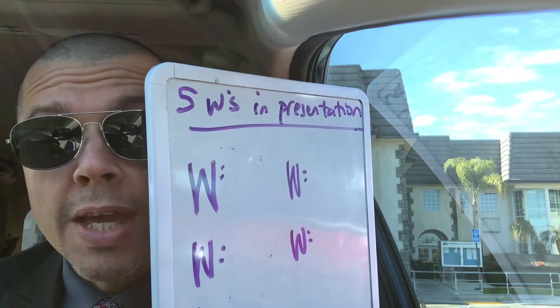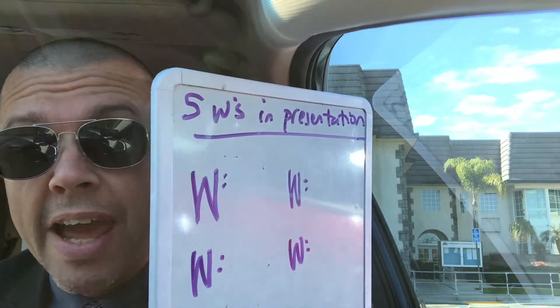Five W's in presentation. If you're in a position where you're giving a presentation and you have a short amount of time — let's say between five and ten minutes — don't take up all the time. Be shorter than everyone else and your presentation will stand out. You should use the five W's for your presentation.